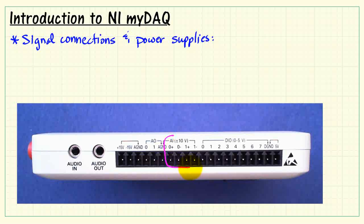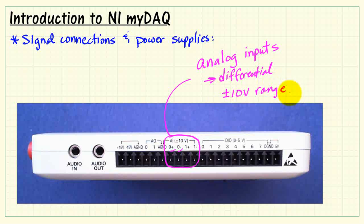We also have two analog input channels. These analog inputs are differential, so we have both a plus side and a minus side, so we're measuring the potential difference between those two inputs. The analog inputs have a plus-minus 10 volt range, and again, that's indicated right there on the face of MIDAC.